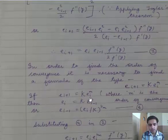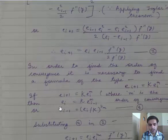If ei+1 equals k times ei to the power m, then we can say that ei equals k times ei-1 to the power m, or ei-1 equals (ei/k) to the power 1/m. This is our fifth equation. This is our fourth equation.